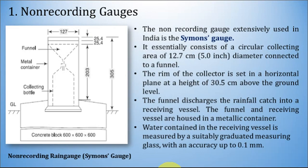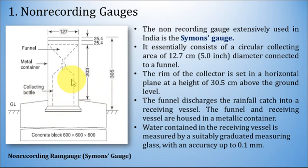Let us start with non-recording rain gauges. In India, Simon's gauge is a popularly known and used non-recording rain gauge. It is the simplest form of rain gauge, consisting of a funnel, metallic cylinder, and collecting bottle. It essentially consists of a circular collecting area of 5 inches diameter connected to a funnel. The rim of the collector is set horizontally at a height of 30.5 cm above ground level. The funnel discharges the rainfall catch into a receiving vessel, also called a collecting bottle, housed in a metallic container.